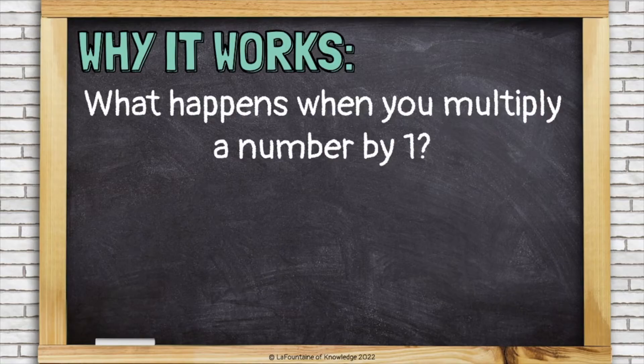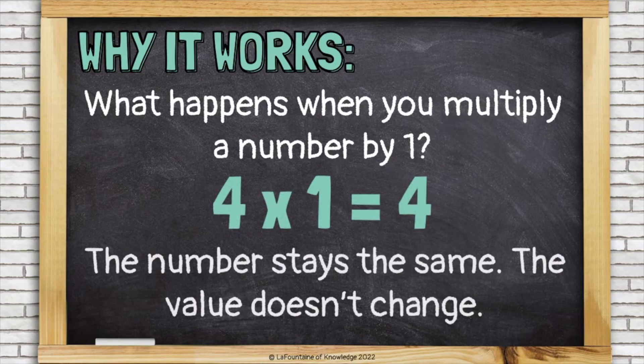Why does this work? What happens when you multiply a number by one? The number stays the same. The value doesn't change. This is called the identity property.